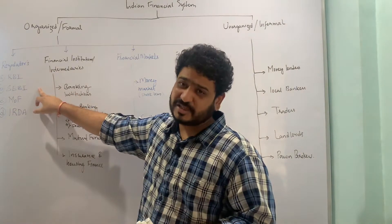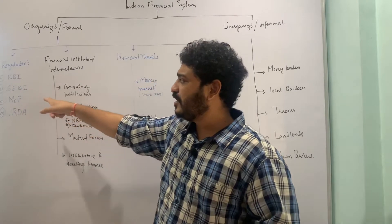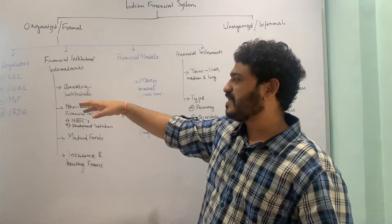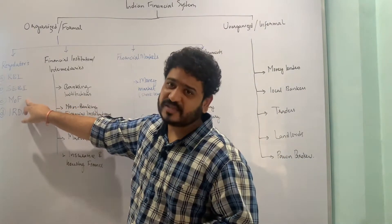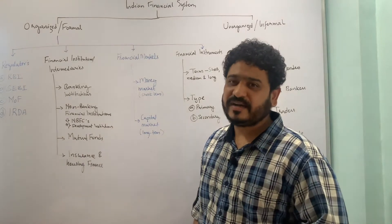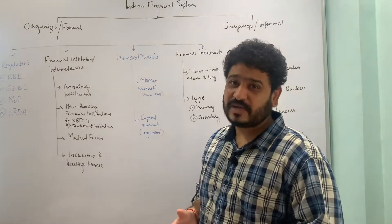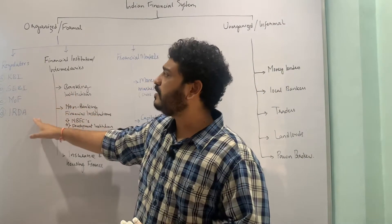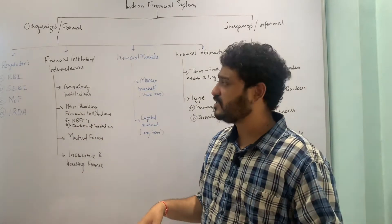Then we have the Securities and Exchange Board of India, which is a regulator looking into the money and capital market. Then we have the Ministry of Finance, and then we have the Insurance Regulatory and Development Authority of India, which is IRDAI, looking at insurance regulation. So these are the four different regulators available in the structure of the Indian financial system.